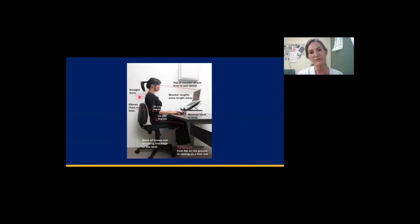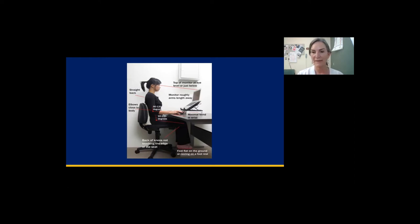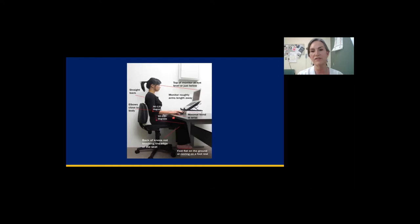Her back is supported with an additional pillow. Optimal chairs usually come up to about the back of the shoulders, but a pillow works, and she's got her knees, hips, and ankles at 90 degrees. These positions will reduce eye strain, back pain, and wrist and shoulder pain. If you have a chair with arms, you should always have it under the meaty part of your forearm, not your elbow or wrist, to prevent nerve impingements.